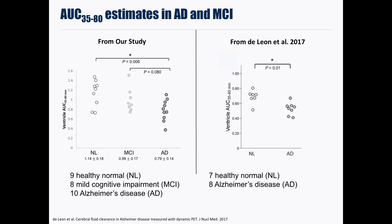We first look at the area under curve values from 35 to 80 minutes for comparison with the study by DeLeon and colleagues. We successfully replicated the results from the previous study with a significantly decreased lateral ventricular AUC in Alzheimer's disease compared to healthy controls. We also see that the mild cognitive impairment group has intermediate AUC values between those of healthy controls and Alzheimer's, though the MCI group is not significantly different from either the healthy or the Alzheimer's groups.